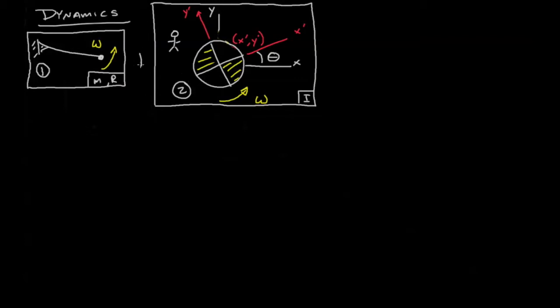I want to know what happens if we combine these two ideas. One is a point mass going around a pivot; the other is some sort of rigid body spinning around a pivot. If we combine these two, what do we get? Today we're going to look at the equations that govern the motion of scenario one and scenario two to understand how rigid bodies rotate around a pivot.